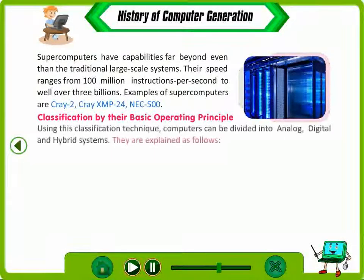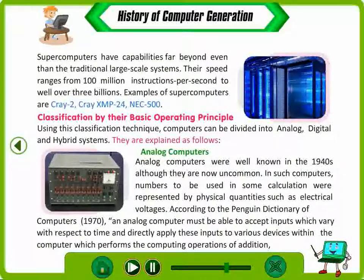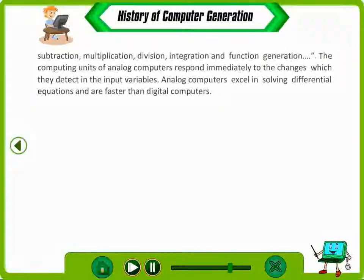Classification by Basic Operating Principle. Using this classification, computers can be divided into analog, digital and hybrid systems. Analog Computers: According to the Penguin Dictionary of Computers, an analog computer must be able to accept inputs which vary with respect to time and directly apply these inputs to various devices within the computer which perform the computing operations of addition, subtraction, multiplication, division, integration and function generation. The computing units of analog computers respond immediately to changes detected in the input variables. Analog computers excel in solving differential equations and are faster than digital computers.